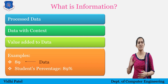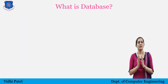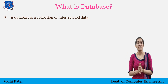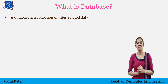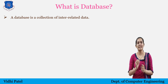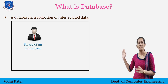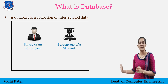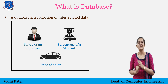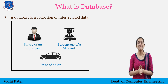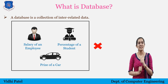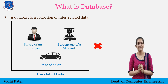Now the next term is database. What is a database? A database is a collection of interrelated data. To understand interrelated data, consider an example: the salary of an employee, the percentage of a student, and the price of a car are all data, but they cannot be in the same database because they are not related to each other — they are unrelated data.